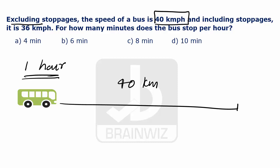Now, let us try to imagine that the bus is going with stoppages, means at some places, it is stopping and moving. And in this one hour, it cannot reach to the distance of 40 km. It will reach 36 km in this one hour.